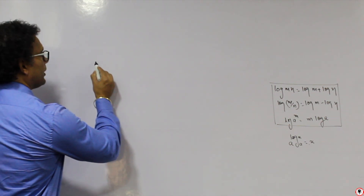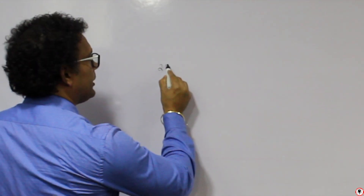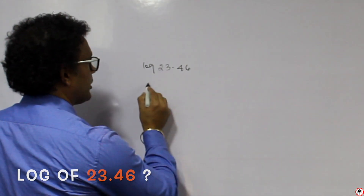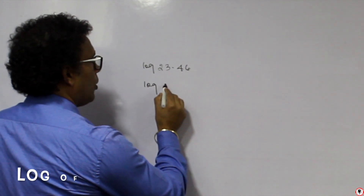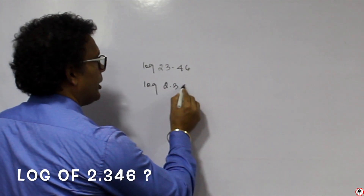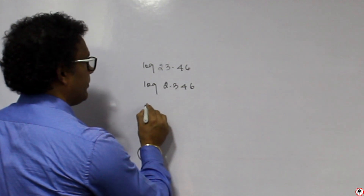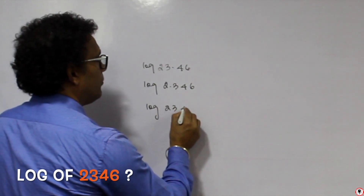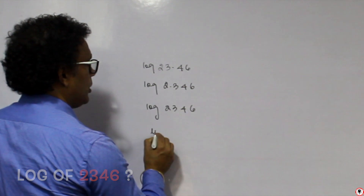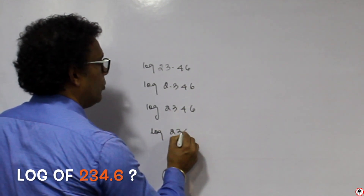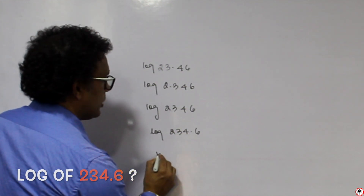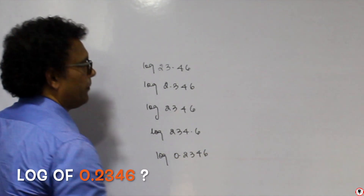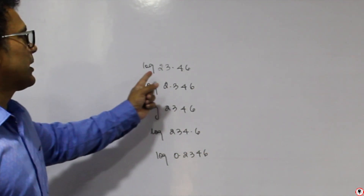Suppose we have numbers like 23.46, 2.346, 2346, 0.2346, and 0.02346. What is the log of each of these? You can see all these numbers contain the same digits — 2346 — so the mantissa will be the same for all of them.